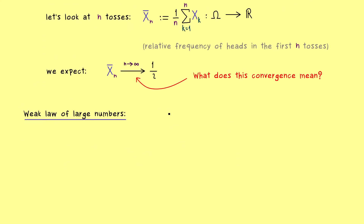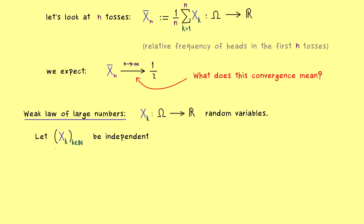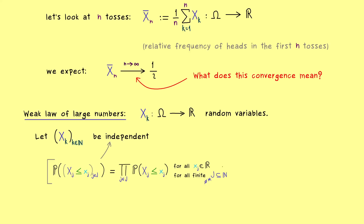Let's state the assumptions needed for the general formulation of the weak law of large numbers. As in the example, we need random variables for each natural number k, and the whole family should be independent. Independence means that for any finite selection of random variables, we have independence — the probability of the joint event can be written as a product, for any finite index set j and all values x_j. Additionally, we need all the random variables to look similar — they should have the same distribution, so we say they are identically distributed.